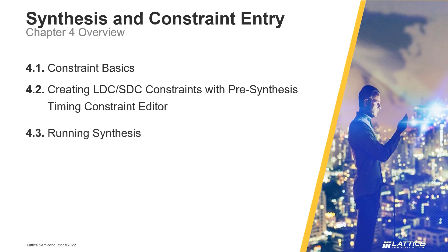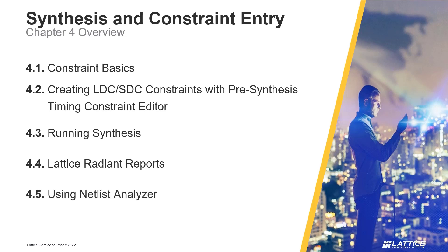In section 3, called Running Synthesis, Radiant's task detail view and process toolbar are discussed, as well as how they can be used to run the project flow for a Radiant project. In the fourth section, Lattice Radiant Reports, we will discuss Radiant's generated reports. Finally, in the fifth section, Using Netlist Analyzer, we will introduce Radiant's netlist analyzer and how it can be used to analyze a design's synthesized netlist.